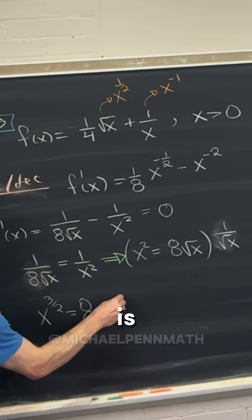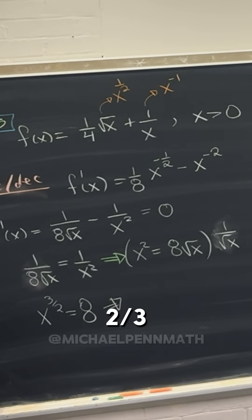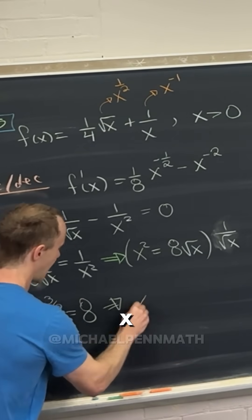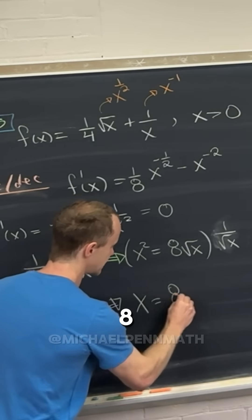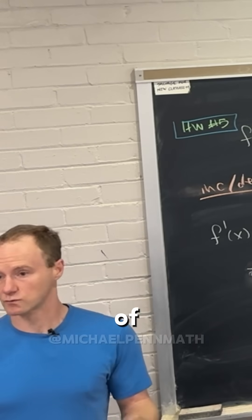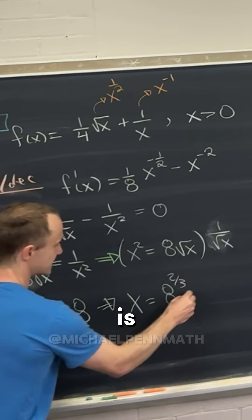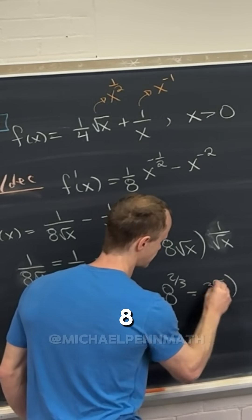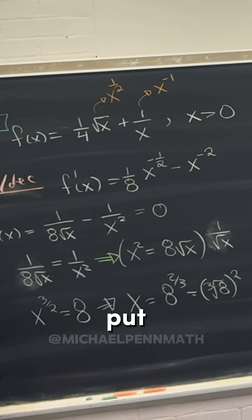But then what we can do is raise both sides to the 2 thirds power, and that's going to give us x equals 8 to the 2 thirds. But then we can rewrite it in terms of roots and powers. So this is going to be the cube root of 8 squared.